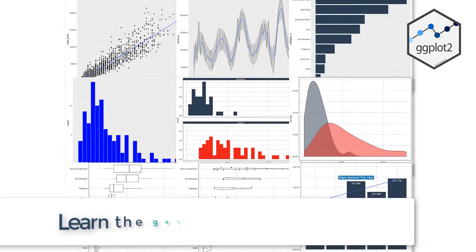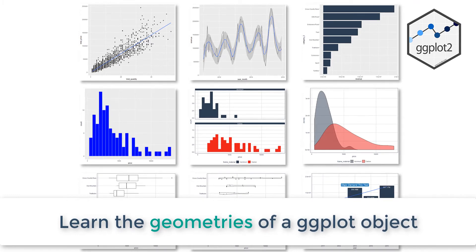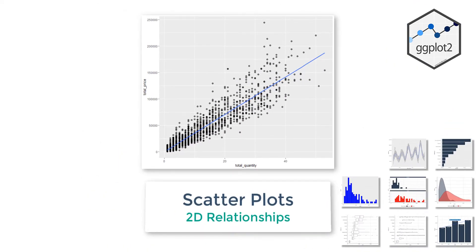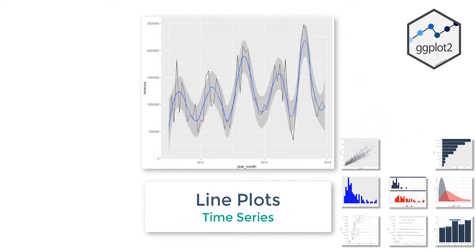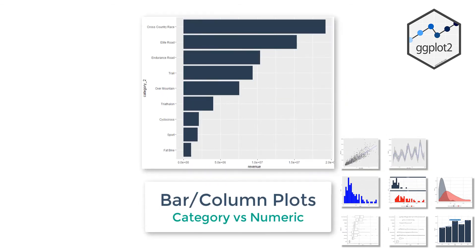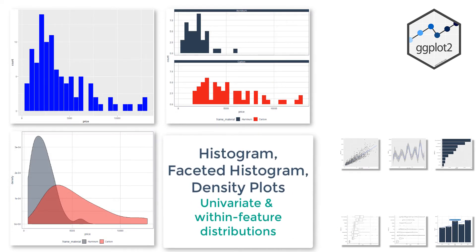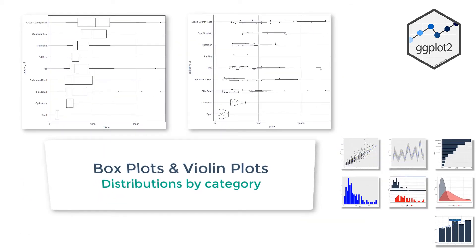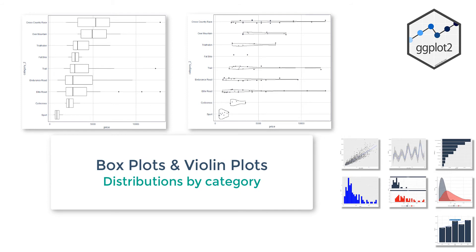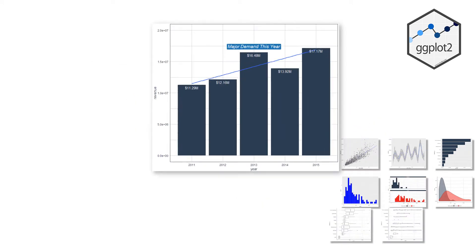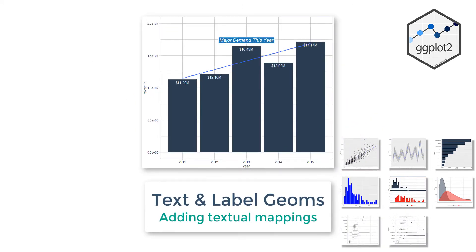Next, you learn each of the primary geometries, including scatter plots for visualizing relationships between two continuous variables, line plots for creating time series plots, bar and column plots for visualizing numeric aggregations by categories, histograms, faceted histograms, and density plots for visualizing univariate and within-category distributions, box plots and violin plots for visualizing distributions by category for features with many categories, and text and label geometries for adding textual mappings to plots.